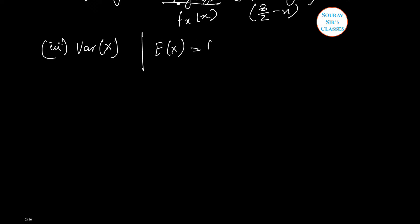Now expectation x is equals to 0 to 1 x fx x dx which is nothing but 0 to 1 x 3 by 2 minus x dx and upon simplification it comes to somewhat 5 by 12.